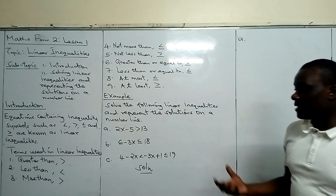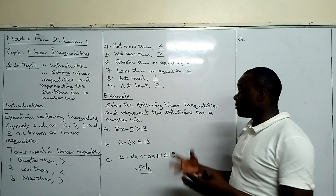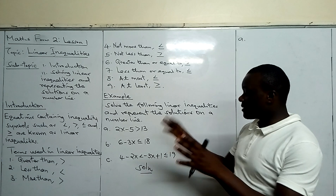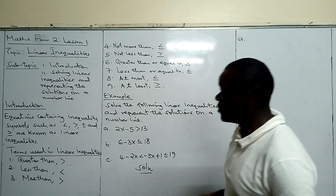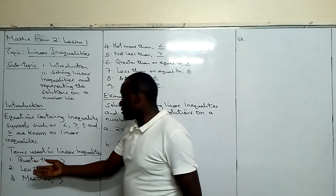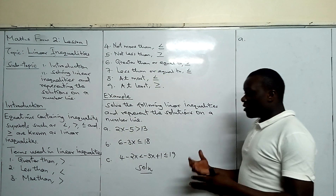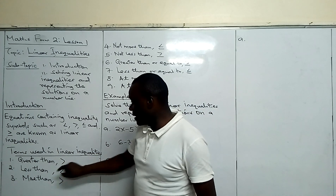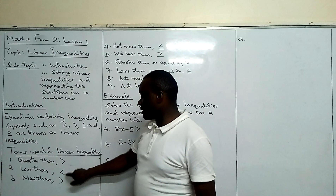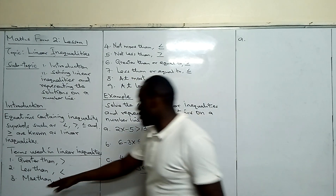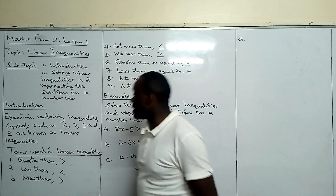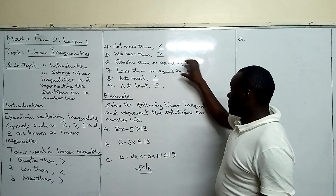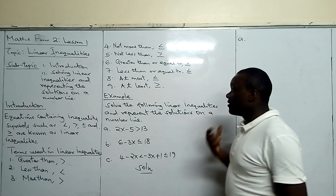Terms used in linear inequalities — some of these terms you have seen before. The first term, greater than, is a very common one whose symbol is given. We have less than, whose symbol is also given. More than is the same as saying greater than. We also have greater than or equal to, and less than or equal to. These are the symbols and I know you have seen them before.